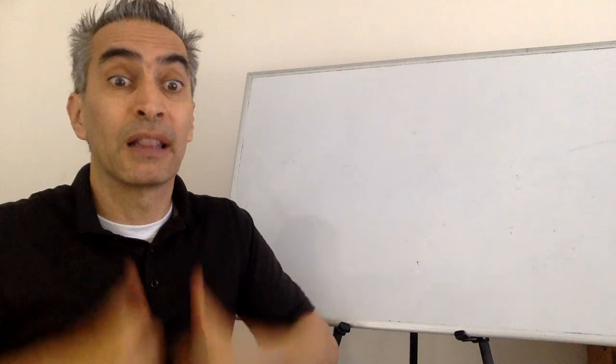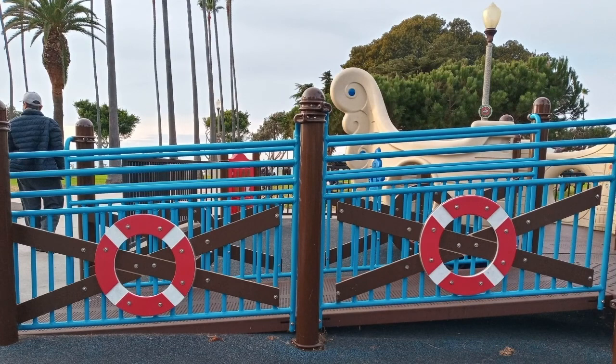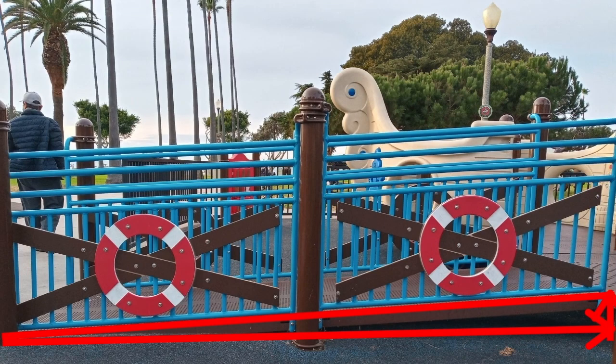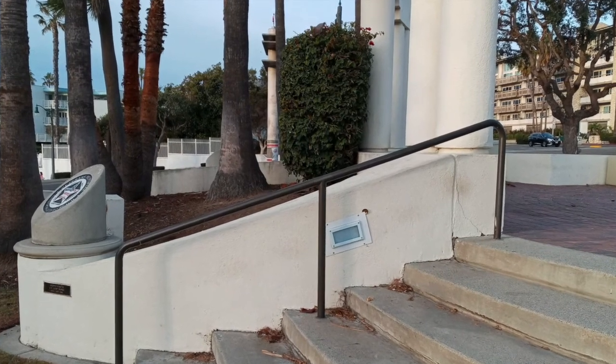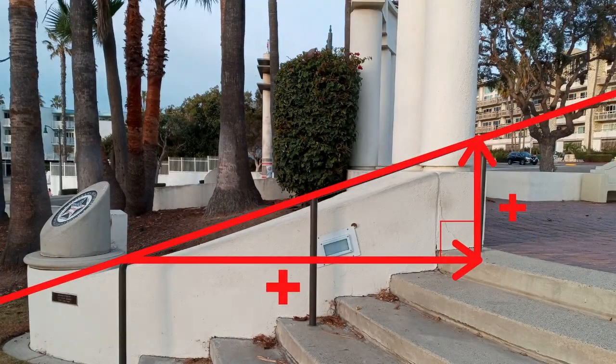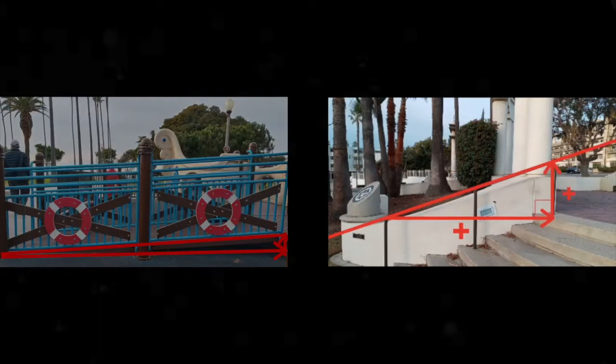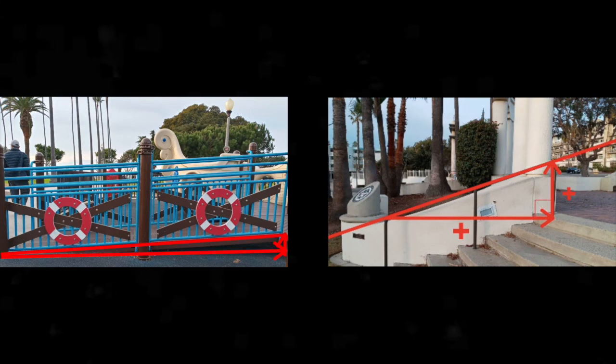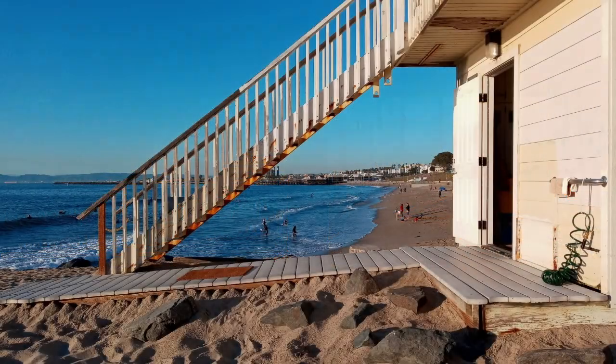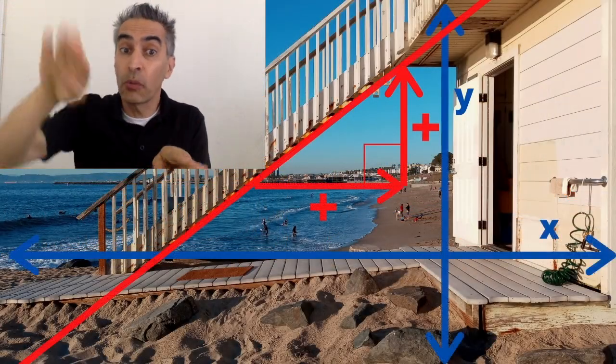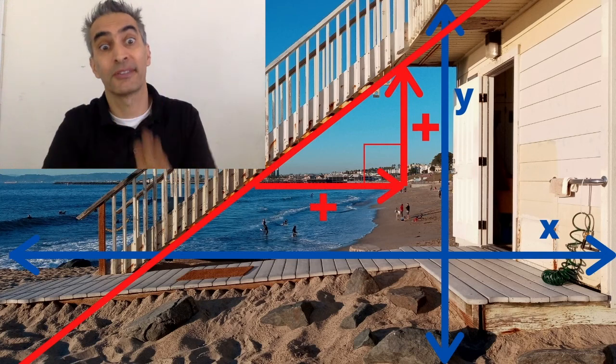Now we will examine some real life examples. We can find slopes in many different places. Notice that this slope is small. Notice this slope is larger than the first example. Notice this slope is larger than the other two examples.